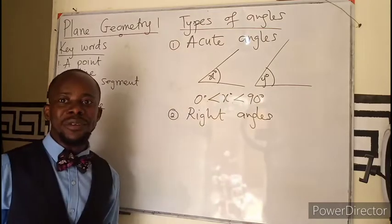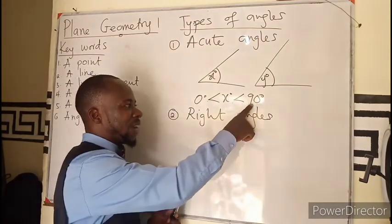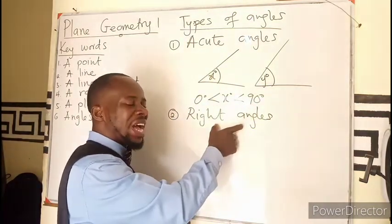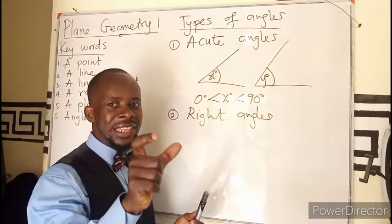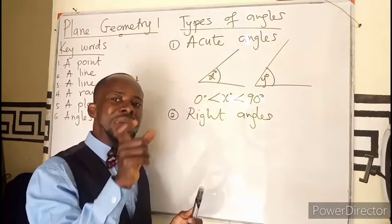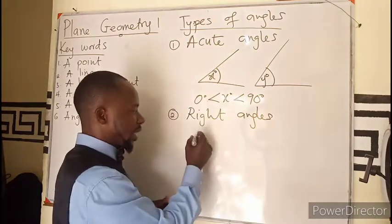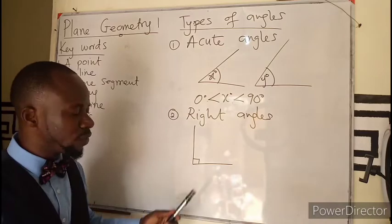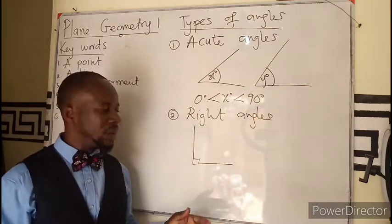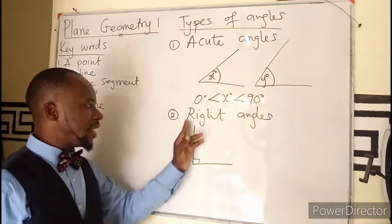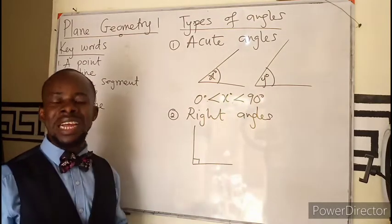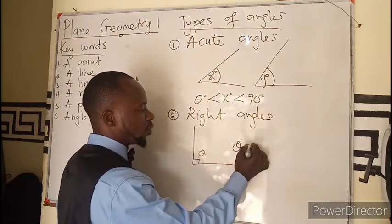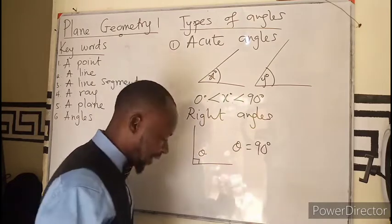Then we have right angles. If the angle is exactly 90 degrees, we always use the box symbol to indicate that the angle is a right angle. So any angle measured to give you exactly 90 degrees — if I call this theta, it means theta equals 90 degrees.